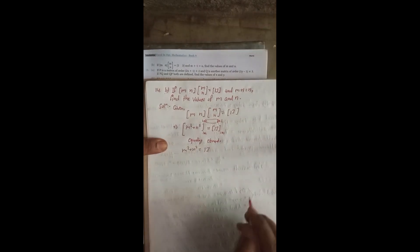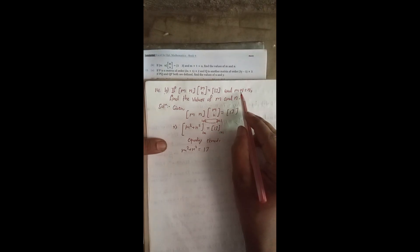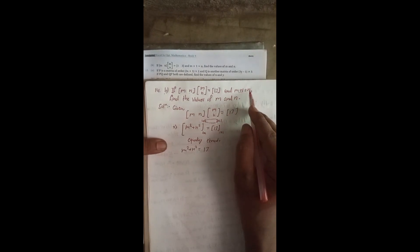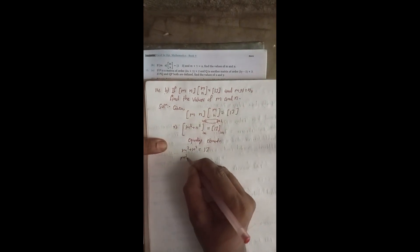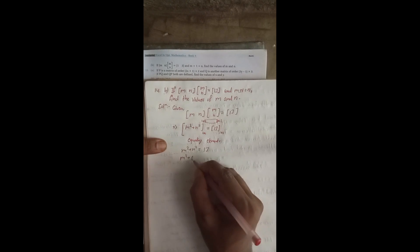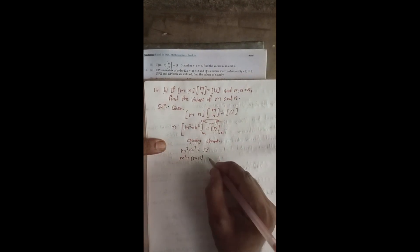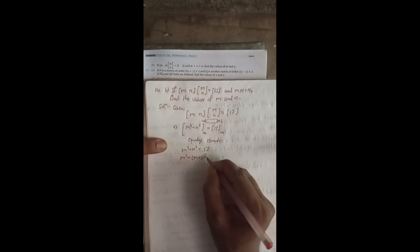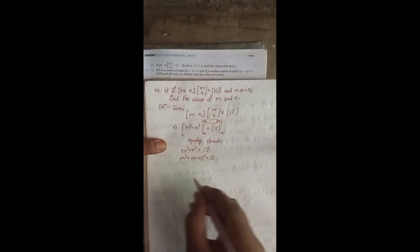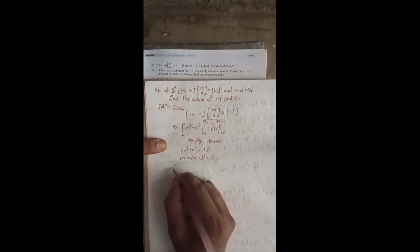Now in the question it is given that M plus 1 is equal to N. So in place of N, we can write M plus 1, giving us M² plus (M+1)² is equal to 13.